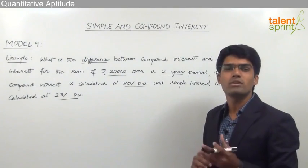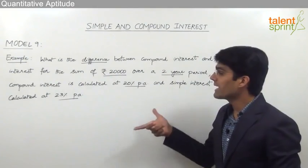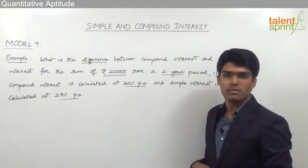As the rates of interest here are different, we need to calculate both CI and SI separately and then find out the required answer. But then doing the calculation is not a very lengthy procedure.